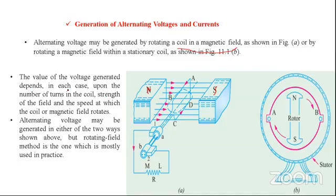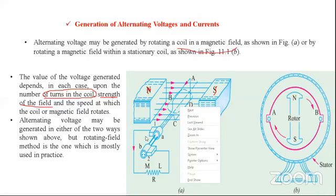The value of voltage generated depends in each case upon: number one, the number of turns in the coil; number two, the strength of the field, the flux density in the air gap; and number three, the speed at which the coil or magnetic field rotates.